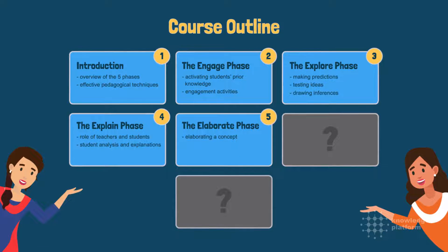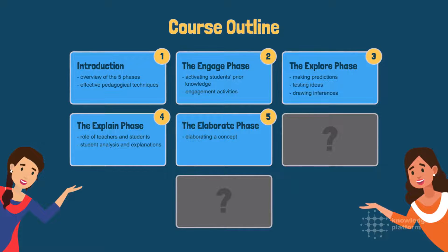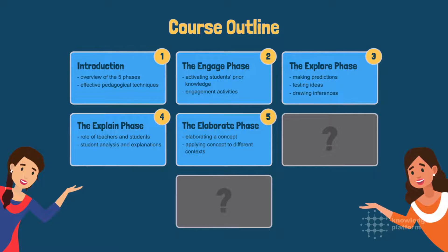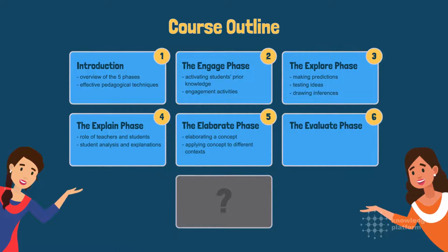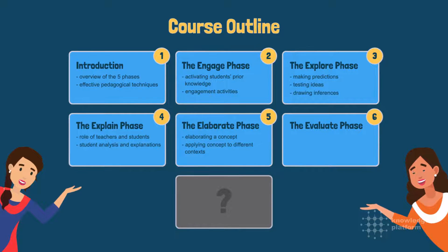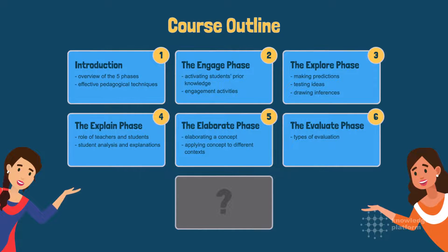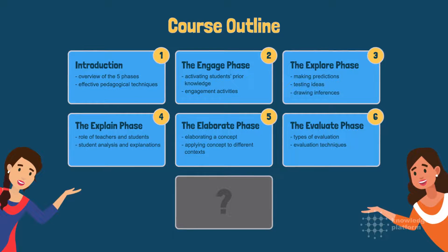The fifth module illustrates the purpose of the elaborate phase and recommends activities that allow students to transfer the knowledge and skills acquired into solving problems in different contexts. Evaluation, the final phase of the 5E model, is addressed in the sixth module. Through this, you will explore different types of assessments and learn when and how to use them in the 5E learning cycle.